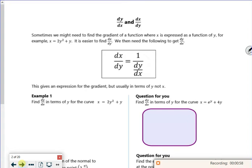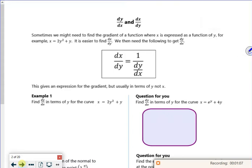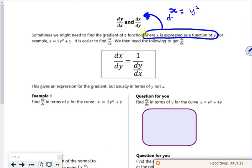Right, let's have a look then. So it says here, sometimes we might need to find a gradient of a function where x is expressed as a function of y. And that's what that is. And it's just the same idea. If you had something like x equals y squared, well, if I differentiate it, it's dx because x is on the left, y is on the right, and then that's just 2y. That's fine.